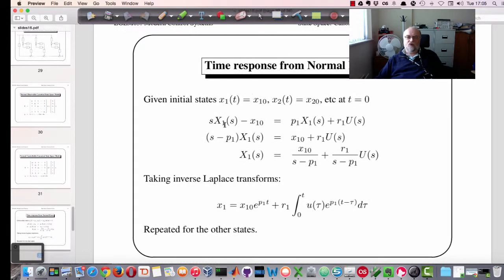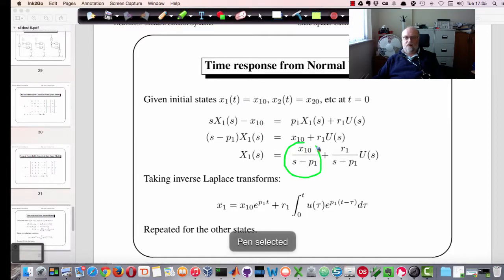But given the structure in this form, if we take that equation that we had on a couple of slides ago and we Laplace transform it, then the derivative of X1 will become sX1 minus X10. And then we'll have the pole times X1 plus the residue times U. So this is going to be s minus p. X1(s) is equal to X10 plus R1 times U of s. So the output of the state response is the initial condition divided by s minus p1 plus R1 times s minus p1 times U.